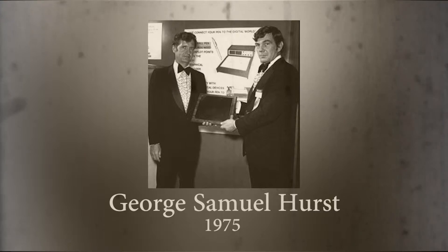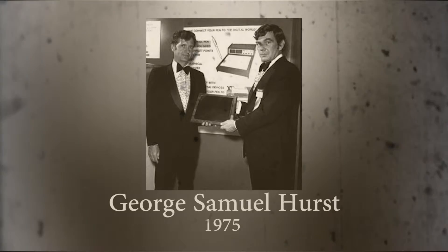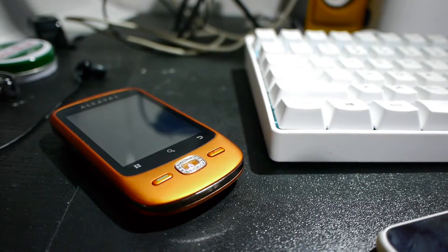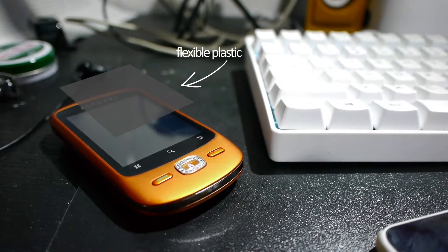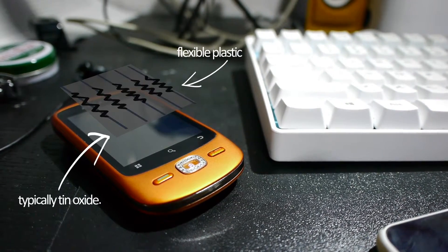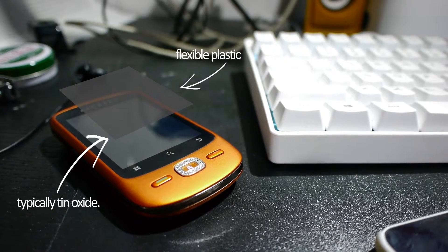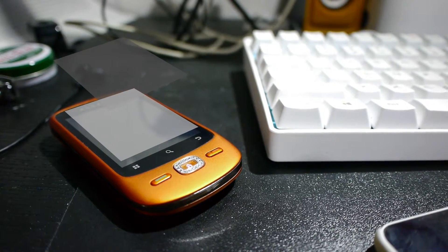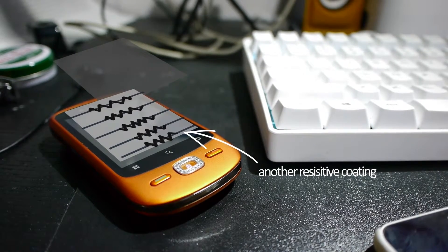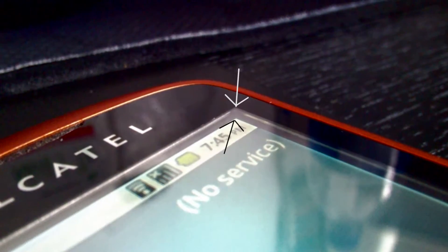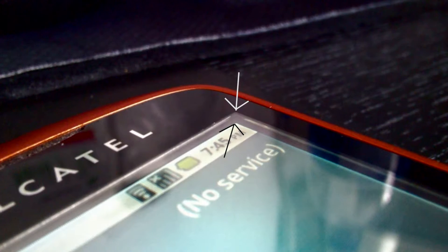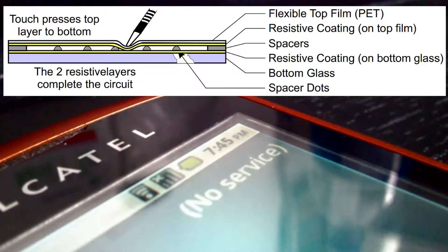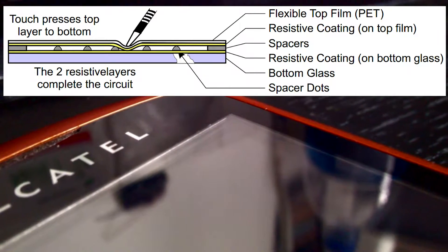Resistive touchscreens were invented by George Samuel Hust in 1975. It involved a top layer of plastic whose underside had a conductive resistive coating — basically a resistor network across the screen — and then another layer underneath which also has a resistive coating. There is a gap between these two layers, usually filled with tiny supporters called spacers to prevent the two from touching each other accidentally. One layer is used to measure the x coordinate and the other to measure the y coordinate.